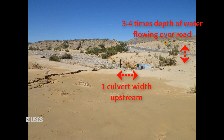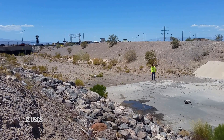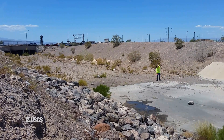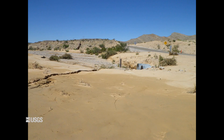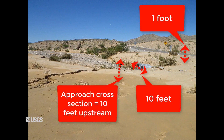That seems like a conundrum — where do you place the approach cross section with two different sets of guidance? Think of it this way: take the larger requirement based on the site conditions and use it. For example, if the depth of water flowing over the crown of the road was one foot and the culvert is ten feet wide, your cross section should be located at least ten feet upstream from the culvert and road. You can use the same approach cross section for both the culvert flow and the road overflow, and you'll apportion the conveyance appropriately when you actually do the computation.